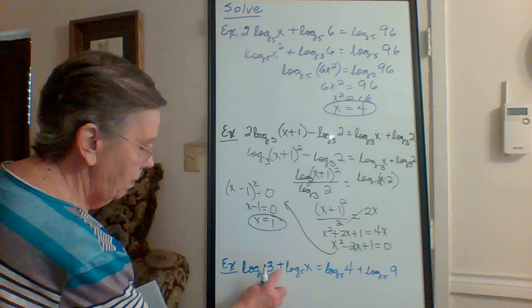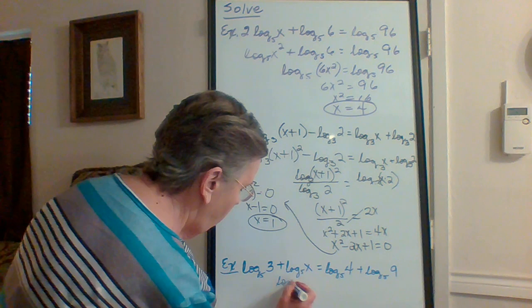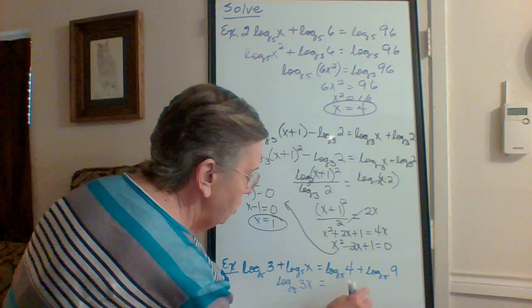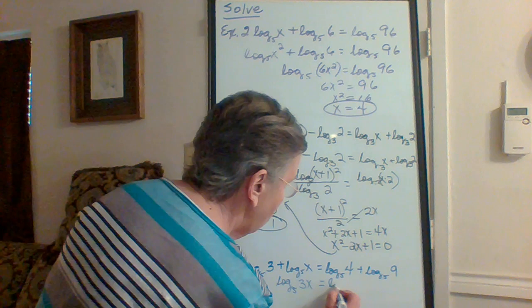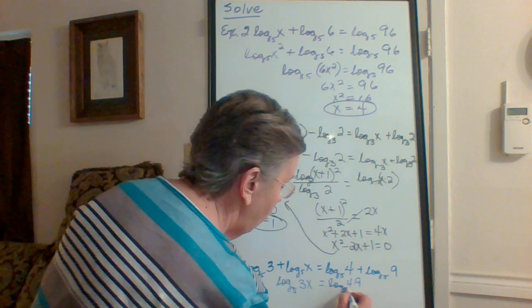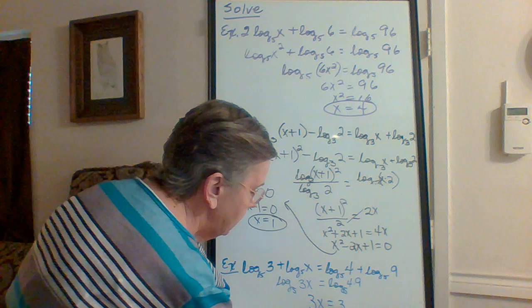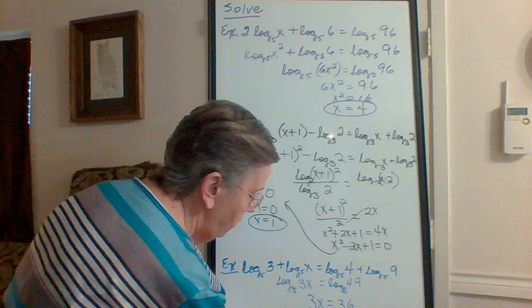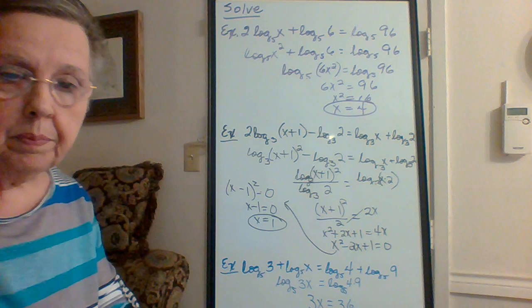Let's try another problem. This right here means I am multiplying, so that's going to be log of 3x with base five. And I'm adding on the right, so that indicates product: log of 4 times 9 with base five. So that means 3x equals 36, and x equals 12.